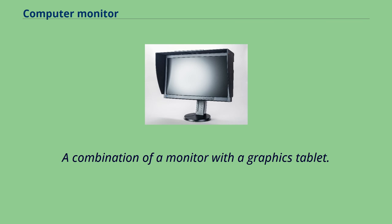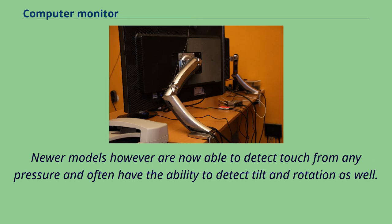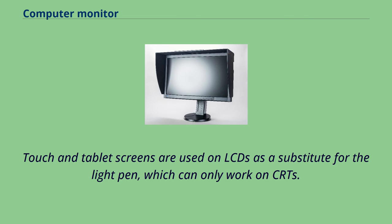A combination of a monitor with a graphics tablet creates a pen display. Such devices are typically unresponsive to touch without the use of one or more special tools requiring pressure. Newer models however are now able to detect touch from any pressure and often have the ability to detect tilt and rotation as well. Touch and tablet screens are used on LCDs as a substitute for the light pen, which can only work on CRTs.